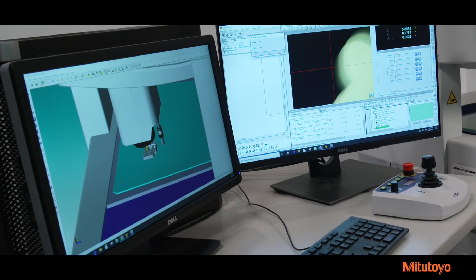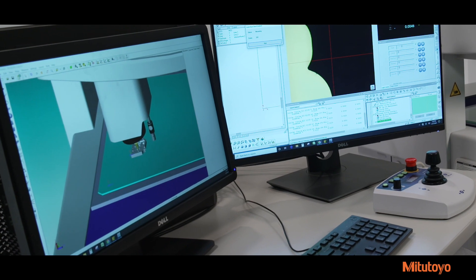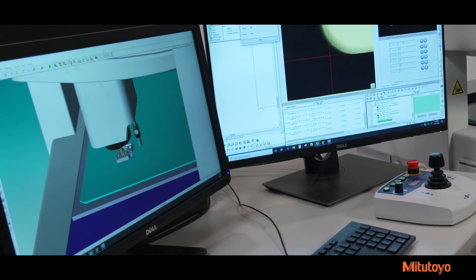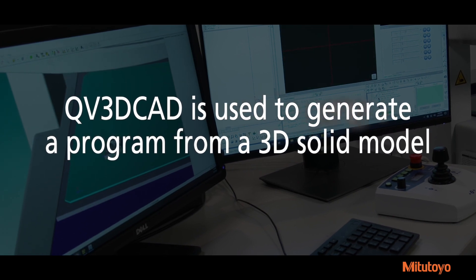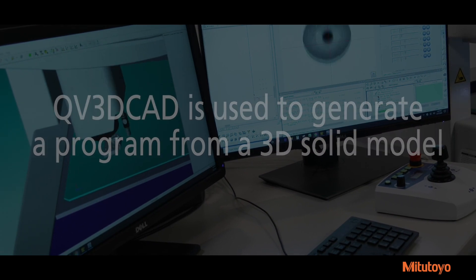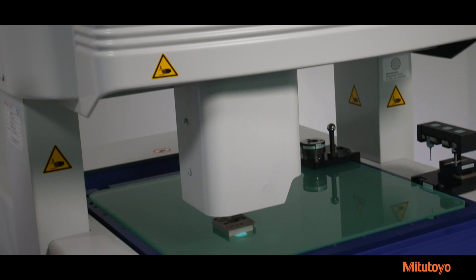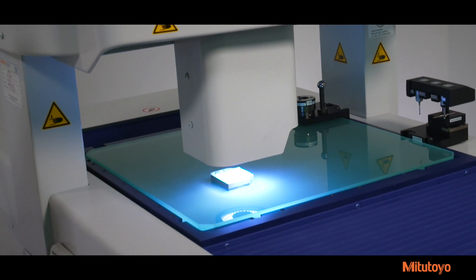In the online mode, QV3D CAD is installed alongside QVPAC, the Mitsutoyo Quick Vision operating software. While in online mode, QV3D CAD is used to generate a program from a 3D solid model, but the lights, focus and other settings can be edited directly at the machine.